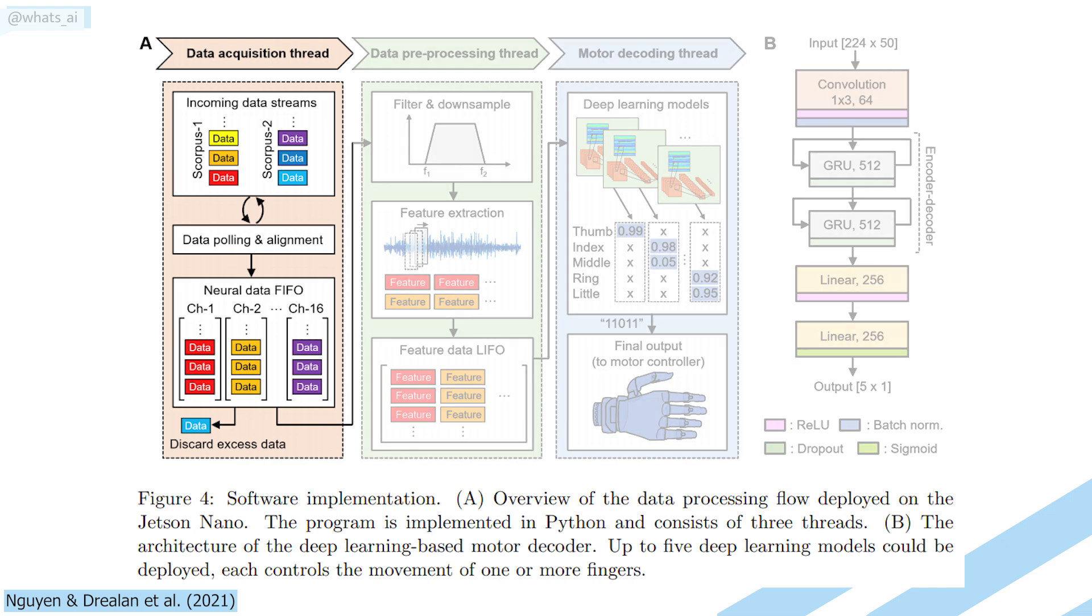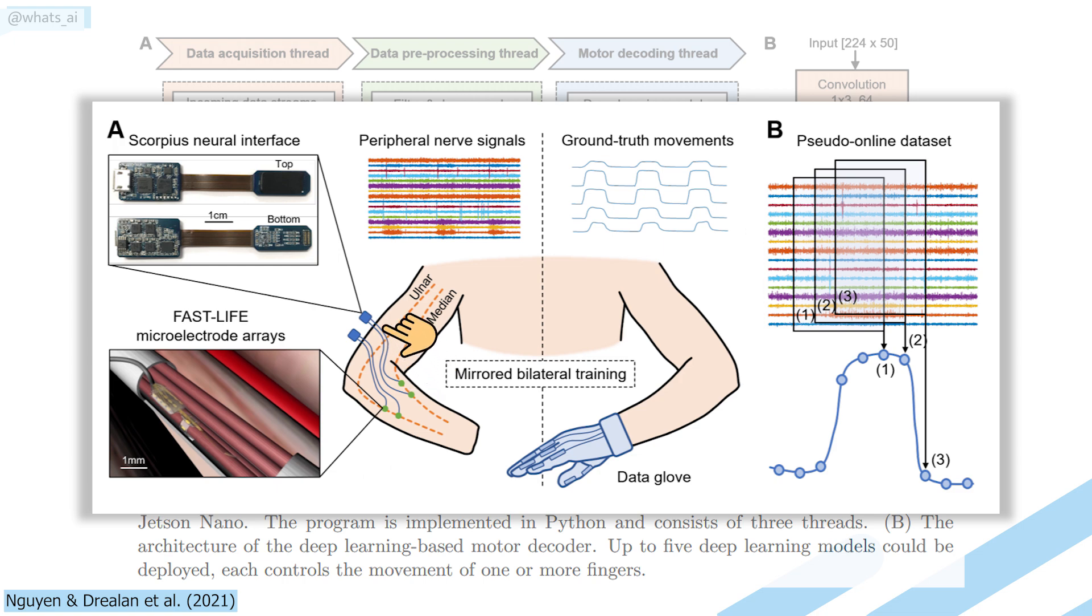At first, the data, in the form of peripheral nerve signals from the amputee's arm, is sent into the platform. Then, it is preprocessed.